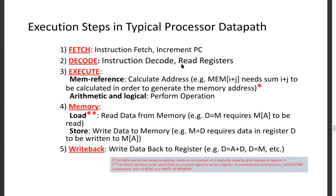Let's define these stages in detail. Fetch (IF) means bringing an instruction from program memory into the CPU and incrementing the PC. Decode (ID) means parsing the 16-bit Hack instruction — is it an A instruction or C instruction? What compute, jump, or destination does it involve? Execute (EX) is the actual execution of any arithmetic or logical operation, invoking the ALU for C instructions that require calculation.